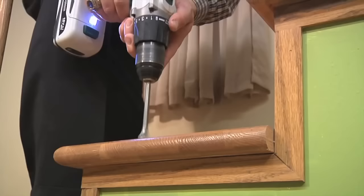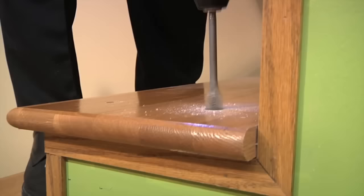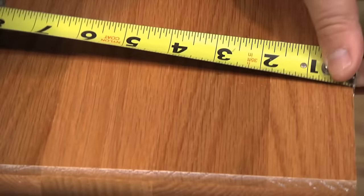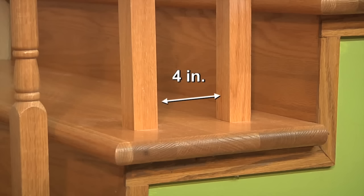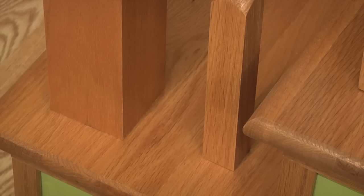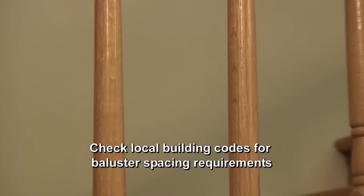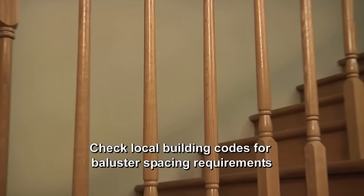Next, 3 quarter inch holes are drilled in each stair tread to receive the balusters. For this particular installation, each hole is drilled 3 and 1 sixteenths inch from the front and back edges of the step to give us a 4 inch space between each baluster. The holes are set back so they are centered with the bottom newel post. Check your local building codes to make sure the spacing between the balusters meets requirements.